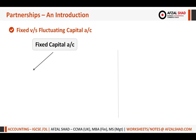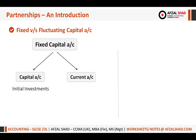In the fixed capital method we prepare two accounts: first the capital account, second the current account. Under the capital account there is only one entry — the initial investment made by the owner. All remaining entries go to the current account: transactions that increase or decrease capital, such as interest on drawings, interest on capital, partner salaries, and the share of profit at the end.